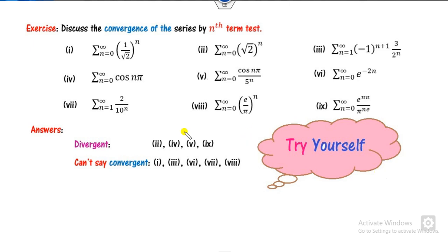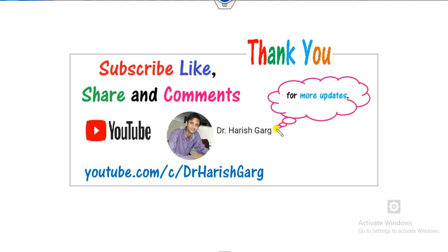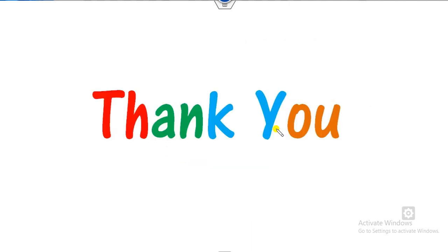These are the exercises for you. I have given 9 examples with answers for you to verify. For those where the limit goes to 0, another test is needed. We will see the next lecture on the nth partial sum sequence and solve all these examples again with the help of the next test. I hope you will like, comment, and share this video with your friends. Best wishes.